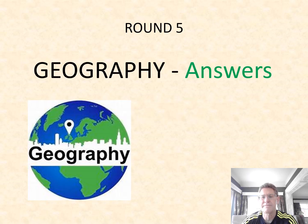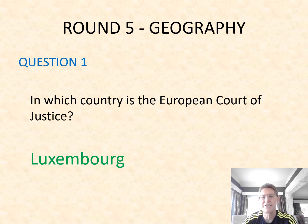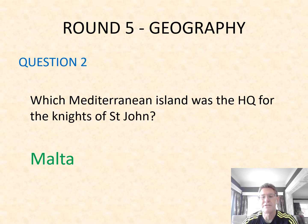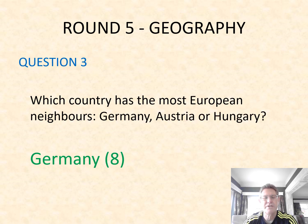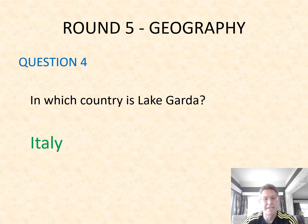On to our geography round. Question one: in which country is the European Court of Justice? In Luxembourg. Question two: which Mediterranean island was the headquarters for the Knights of St. John? Malta. Question three: which country has the most European neighbours — Germany, Austria or Hungary? It's Germany — it has eight borders. Question four: in which country is Lake Garda? It's in Italy — it's the largest lake in Italy.